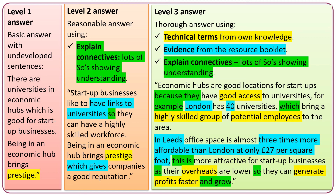A level three answer uses evidence from the resource booklet with plenty of explain connectives. For example: 'Economic hubs are good locations for startups because they have good access to universities — London has 40 universities, which bring a highly skilled group of potential employees to the area. In Leeds, office space is almost three times more affordable than in London at only £27 per square foot. This is more attractive for startup businesses as the overheads are lower, so they can generate profits faster and grow.' It doesn't have to be lengthy — it just needs technical terms, evidence from the resource booklet, and explain connectives showing understanding.